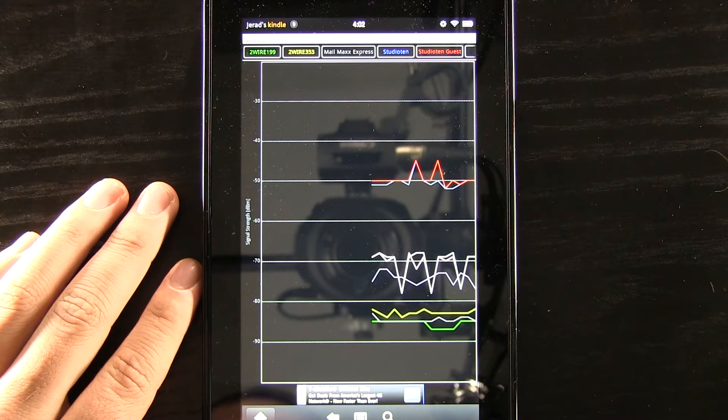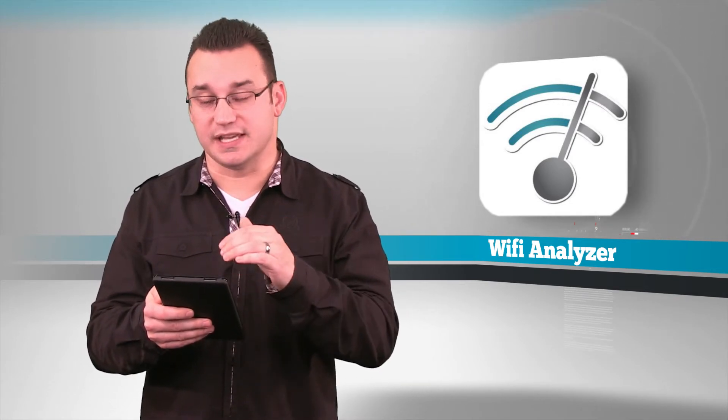So this is a good view if you're wondering if your signal is dropping out and it's not staying strong. Perhaps you could move around your home or your office and see where the signal drops. This is a really neat view because it will show over time. As you move, you'll see the signal move up and down on a graph and just move around, see where that signal drops.